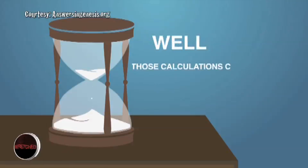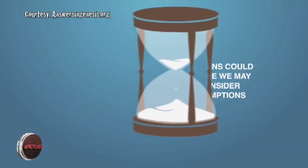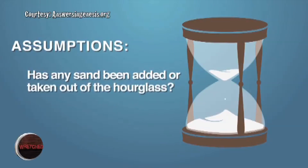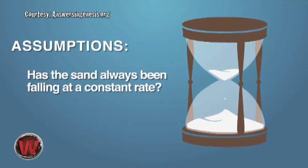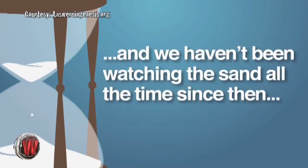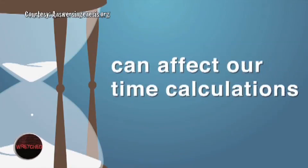Well, those calculations could be wrong because we may have failed to consider some major assumptions. Like, was there any sand at the bottom when the hourglass was turned over? Has any sand been added or taken out of the hourglass? Has the sand always been falling at a constant rate? Since we did not observe the initial conditions when the hourglass started, and we haven't been watching the sand all the time since then, we must make assumptions. All three of those assumptions can affect our time calculations.